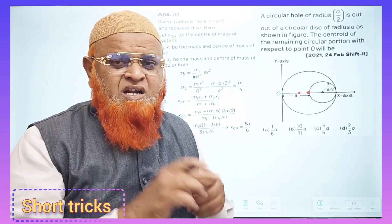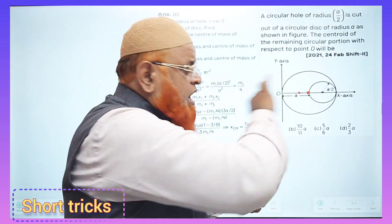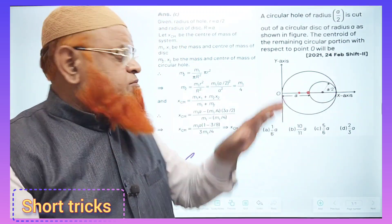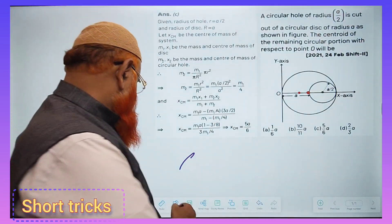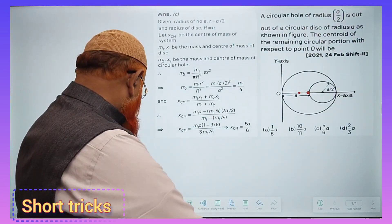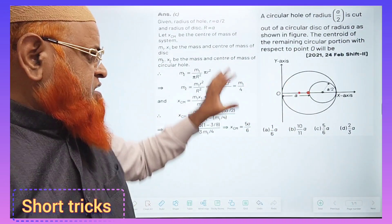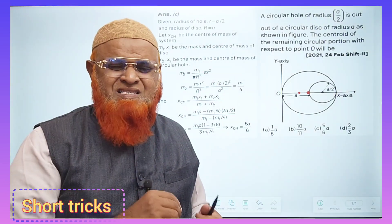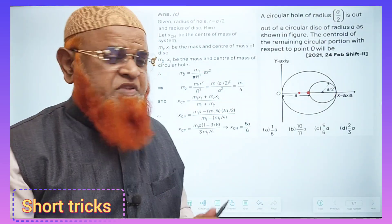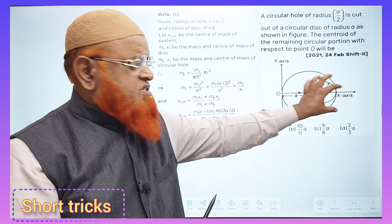From that, a smaller disk is carved out and the solution given in the book is this much. This is the solution given in the book. Instead of doing all this stuff, let us go in a different and shortcut method.